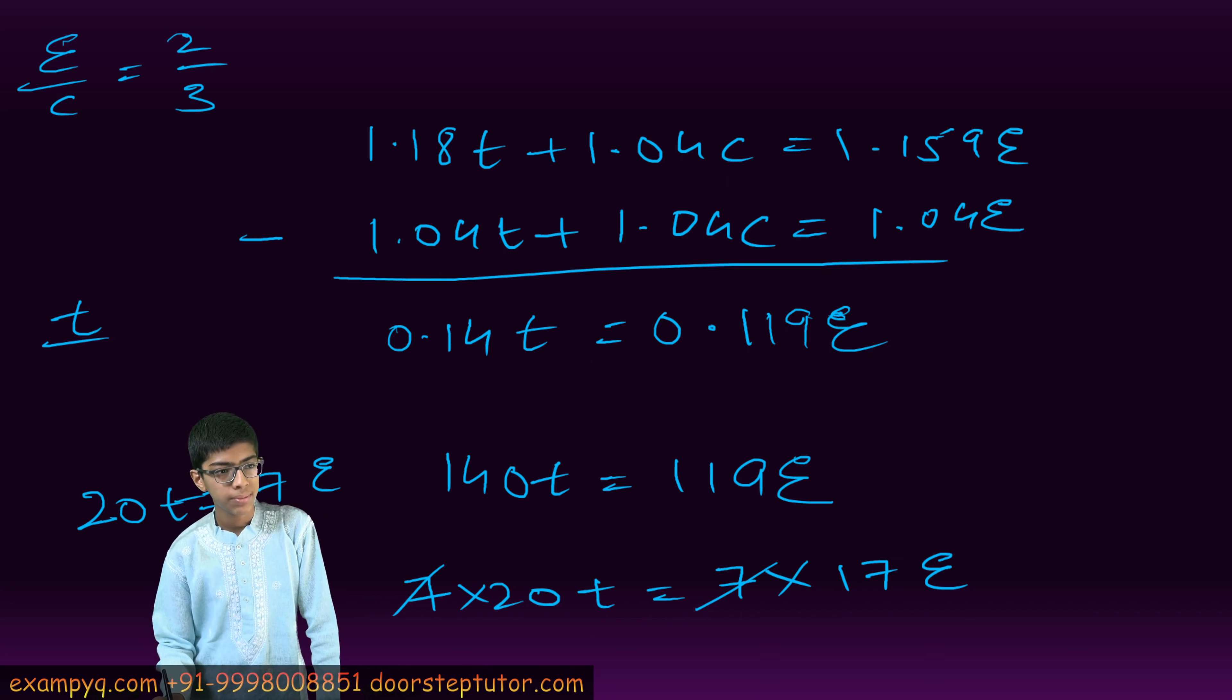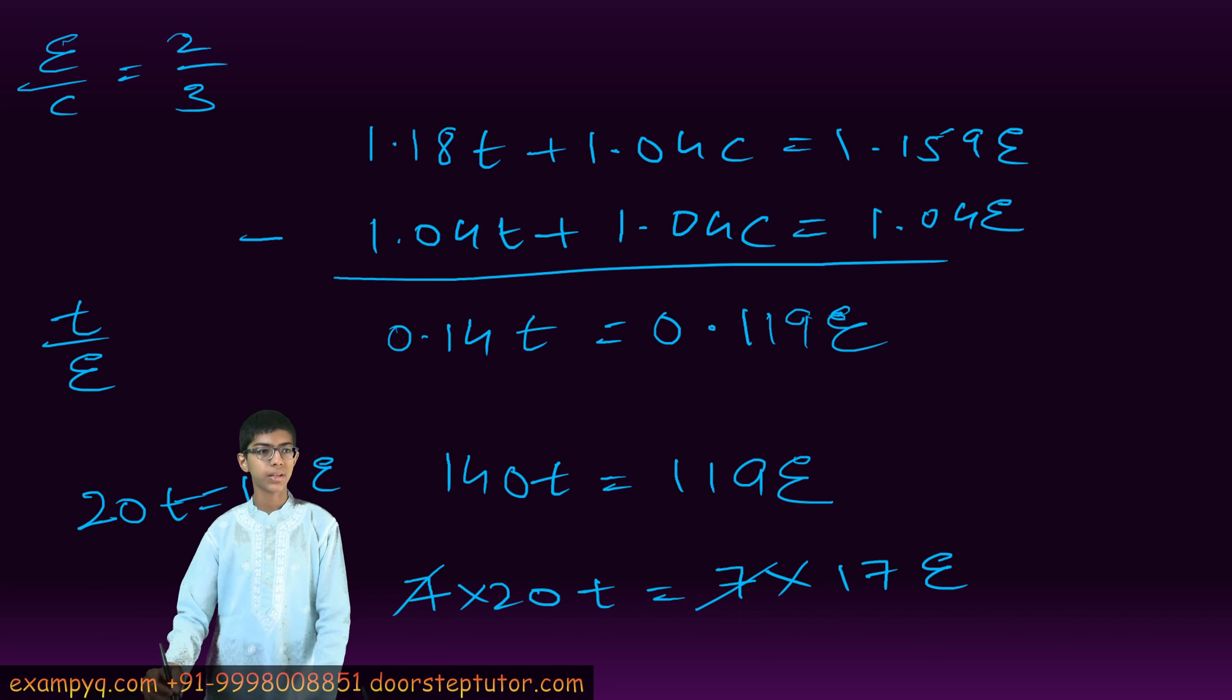So T by E, this time E is in the denominator, is equal to 17 by 20.